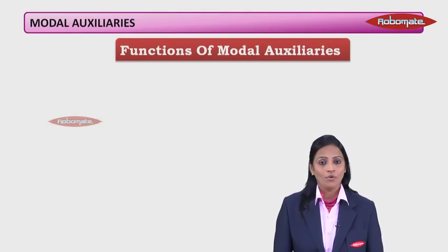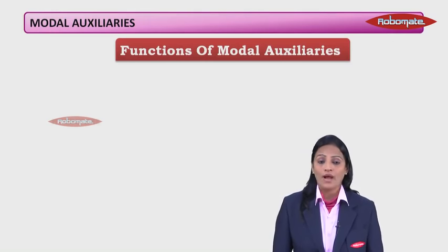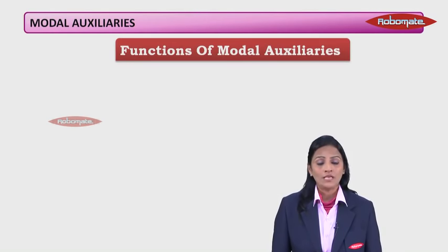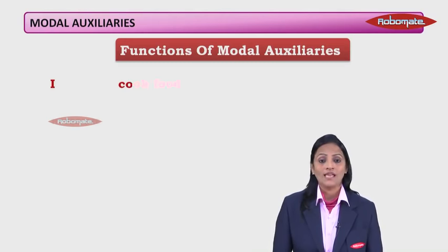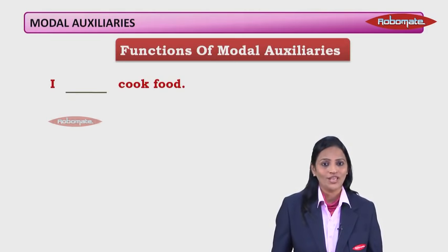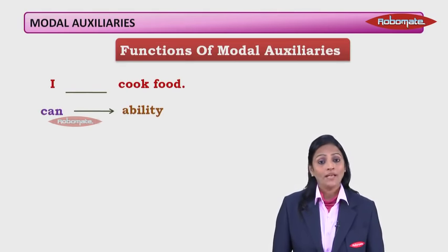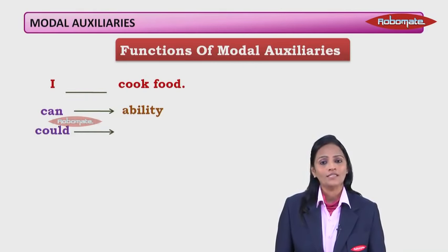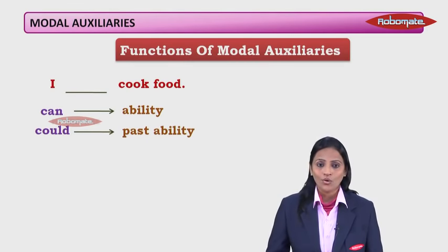Now we shall look at the different functions of modal auxiliaries, because in examinations we may need to fill in blanks with the correct modal auxiliary. Let's use the statement 'I dash cook food' with different modals. 'I can cook food' expresses ability. 'I could cook food' expresses past ability — meaning now I cannot, but earlier I could.